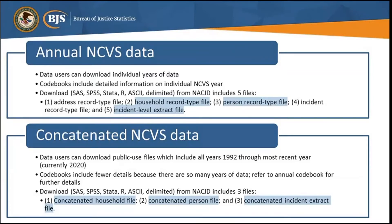And finally, the incident level extract file — which is not the same as the incident record type file — is a file created by appending household and person variables to incident records. This allows analysts to examine demographic characteristics and household characteristics of persons that reported a crime incident. Files 2, 3, and 5 are the most commonly used for NCVS analysis.